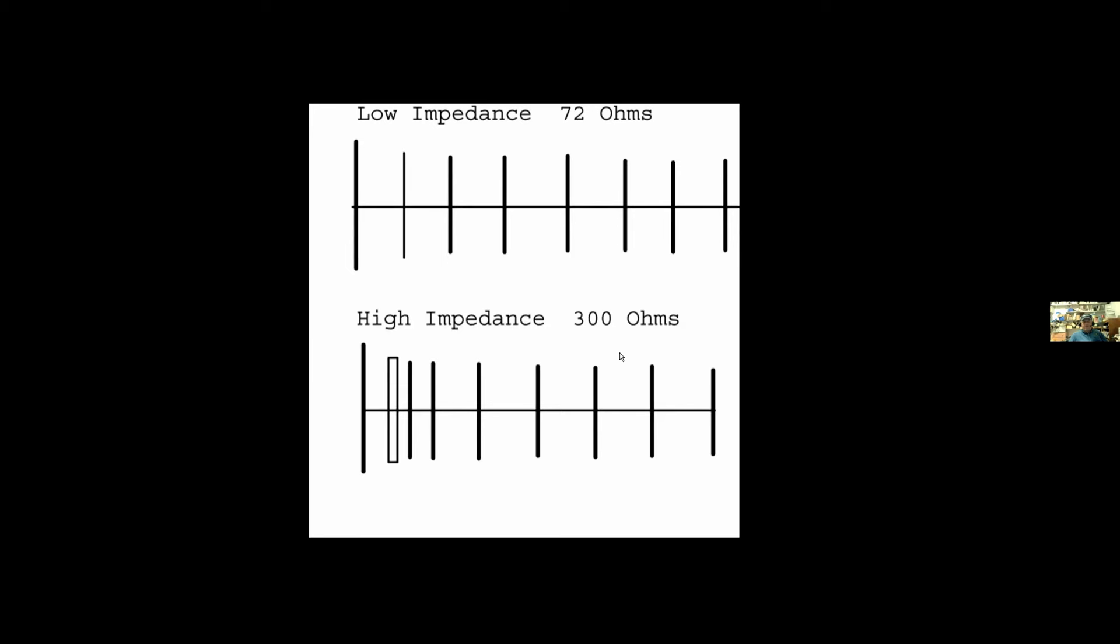And the gain of a Yagi is determined by the distance between the last element and the first. That's what determines the gain. The driven element, the number of elements, the spacing of the elements, make it broadband or impedance matching. But it doesn't change gain very much. That's the total length.